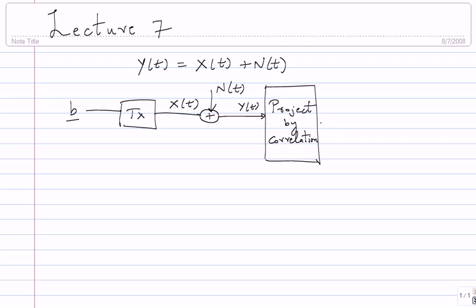So you project first, and then try to do your decoding. Project by correlation. We also saw that this correlation can be accomplished by filtering — matched filtering. It is called matched filtering because the impulse response is matched to the correlating signal, phi star of minus t for instance. So you can think of that also as filtering.